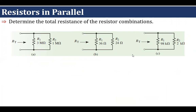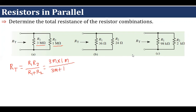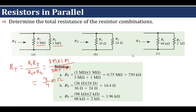Now find the value of RT in all three cases. In case one, 3 MΩ and 1 MΩ are connected in parallel. Since two resistances are in parallel, RT = (R1 × R2)/(R1 + R2) = (3M × 1M)/(3M + 1M) = 3/4 MΩ = 0.75 MΩ. Since Mega means 10^6, we can also express this as 750 kΩ.